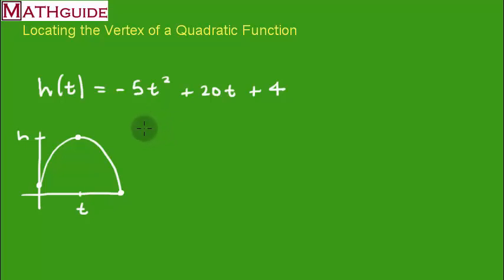So again, I'm going to use the formula. So the formula for T is the opposite of B over 2A. So B is 20, A is negative 5. So what do I get? I get negative 20 all over negative 10, which is 2. So what does that mean? It means two seconds after this projectile is launched, it reaches its maximum height.